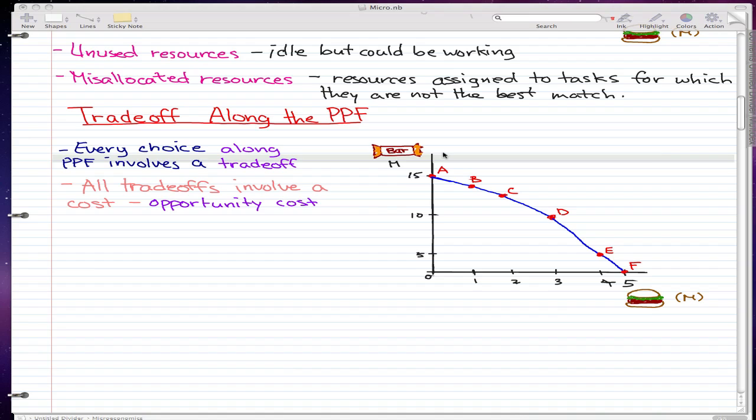That means that all trade-offs involve a cost, that is the opportunity cost. Now let's just go through this graph to really understand how opportunity cost works. And remember, the opportunity cost of an action is the highest valued alternative forgone. The PPF makes this idea precise and enables us to calculate opportunity cost.